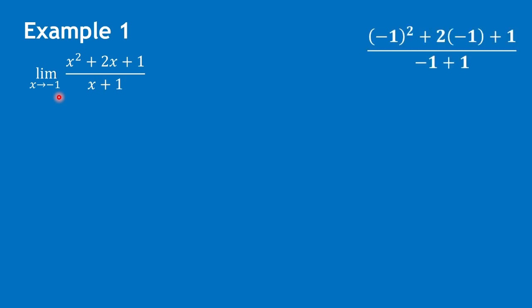If we try to substitute negative 1 into the given function, we would have the square of negative 1 plus 2 times negative 1 plus 1 over negative 1 plus 1. This is an indeterminate form because upon substitution we have 0 over 0.